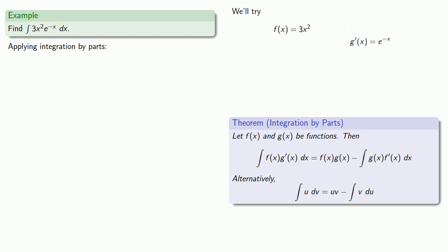Now this only works if I can find both the derivative of f of x and the antiderivative of g prime of x. And we're able to find both of these, so we can proceed. And that gives us a new integral. But how do we evaluate this one?